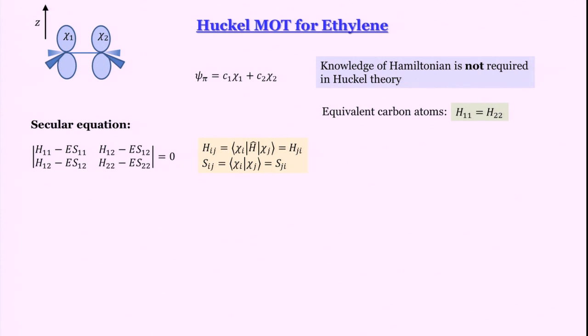For equivalent carbon atoms, h11 must be equal to h22. h_ii is the same as h_jj, even though i and j can be different for equivalent atoms. This is because the Hamiltonian is formulated considering an electron moving in the joint field of the nuclei and other electrons, and electrons are indistinguishable. For equivalent carbon atoms, h11 and h22 are written as alpha, which is called the Coulomb integral.